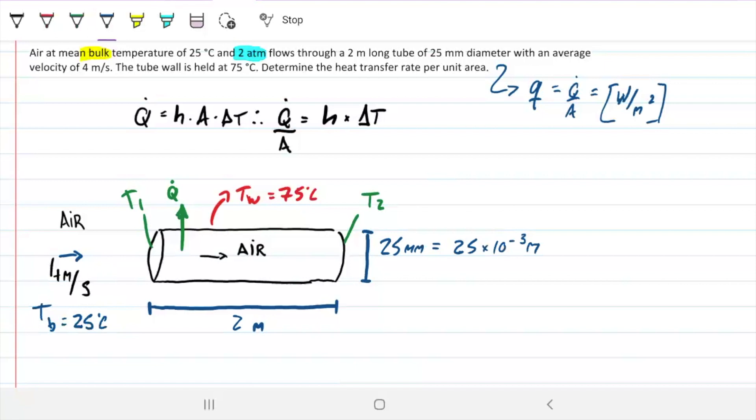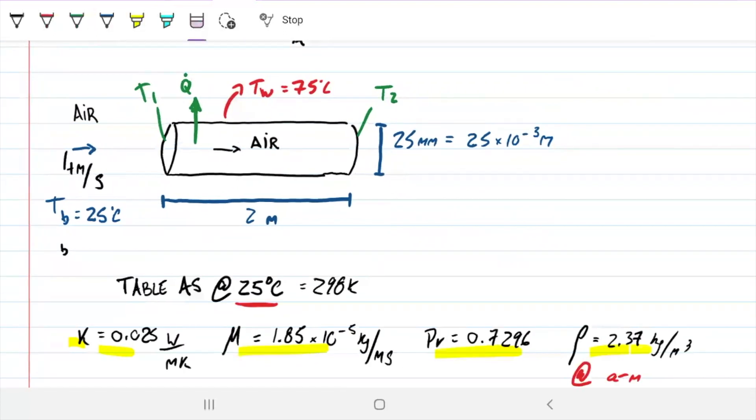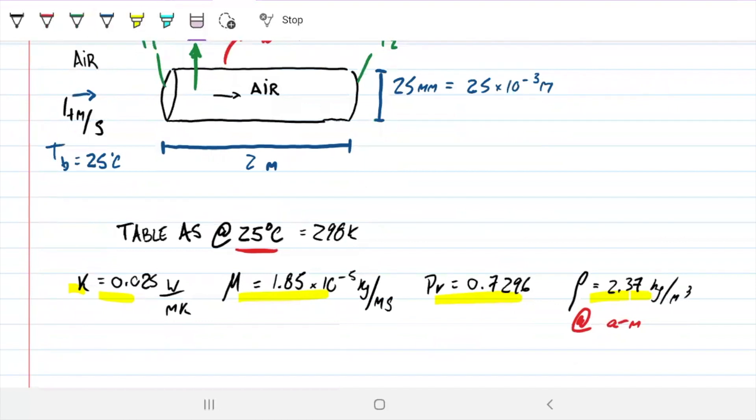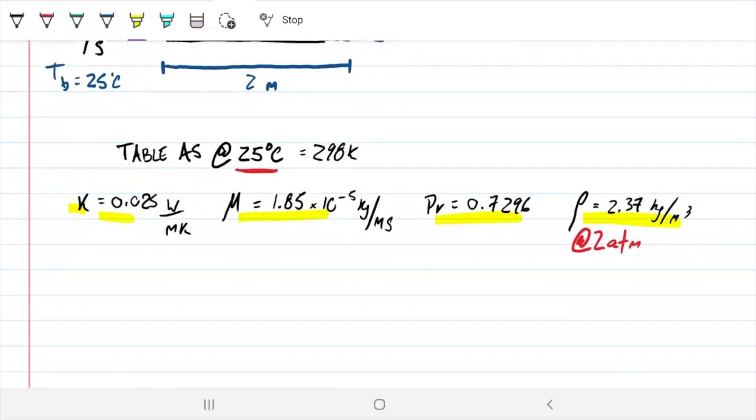So what do we need to do? Find out whether this is turbulent or laminar, then find out whether this is fully developed or underdeveloped, pick the right equation, and find H. Let me go ahead and give you guys the values. So we're looking at 25 on table A5, 25 Celsius, that's 298 Kelvin. These are the values from table A5 at 298. For the pressure of two atmospheres, we can grab the value that we get off the table and multiply by 2, or we can use the same method I just taught you in the previous problem. Regardless, it becomes 2.37.